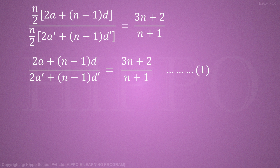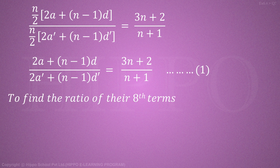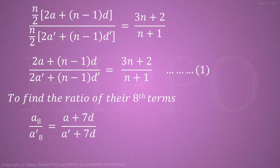To find the ratio of their 8th terms. अब 8th term की ratio find out करनी है. a8 / a8' = (a + 7d) / (a' + 7d').